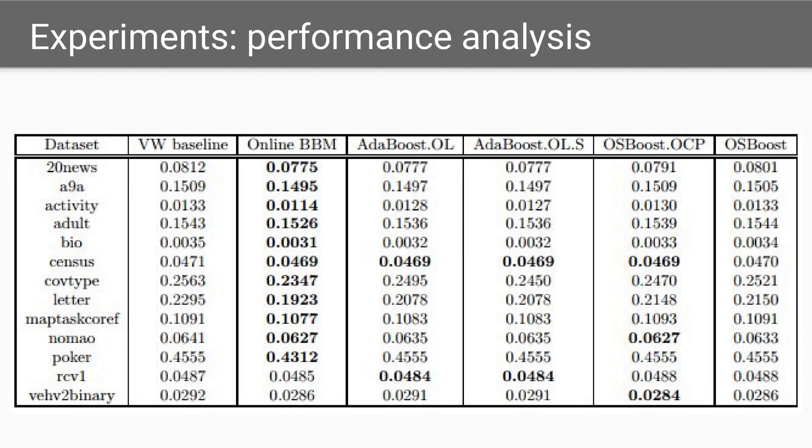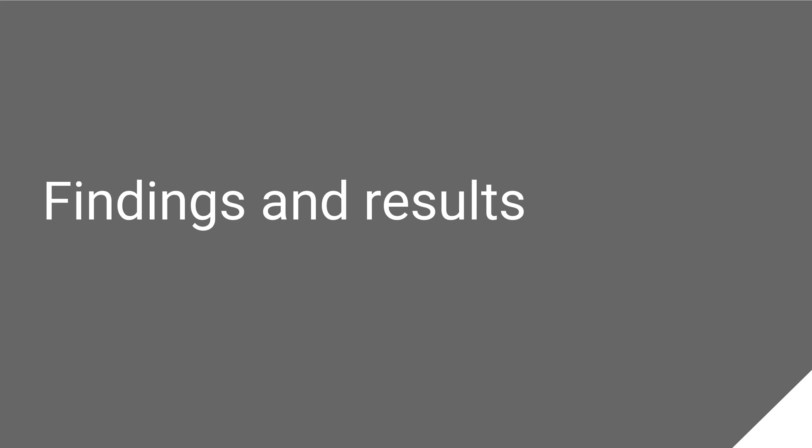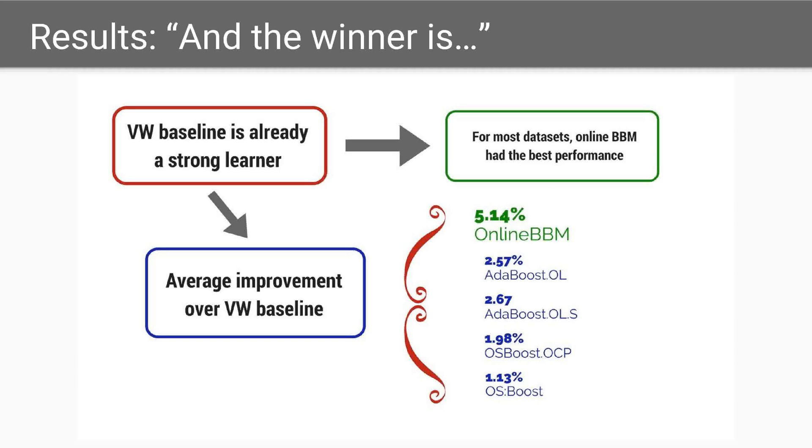Performance is expressed as a function of loss. The lowest loss obtained for each dataset is bulleted, and this is the baseline loss obtained by running the weak learner, VW, on the data. On an already strong basis, online BBM had the best performance.